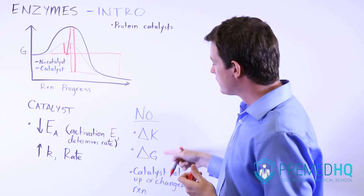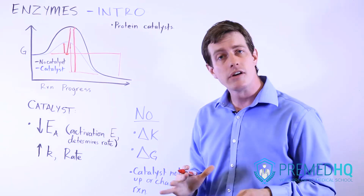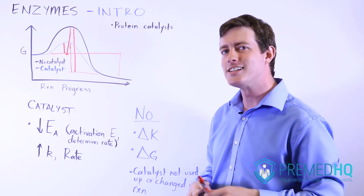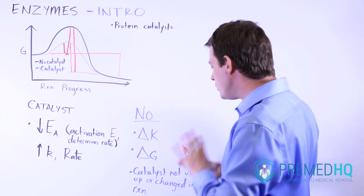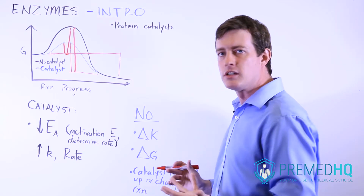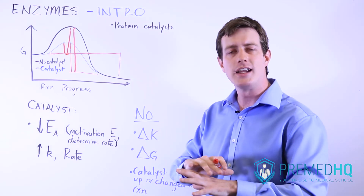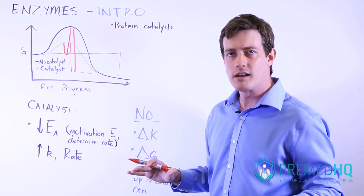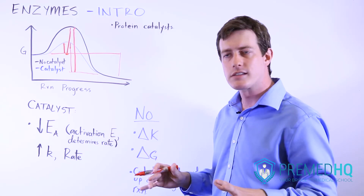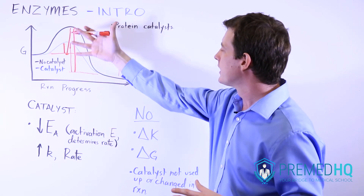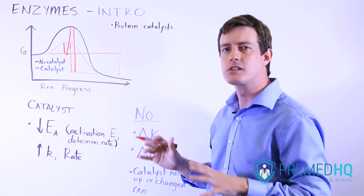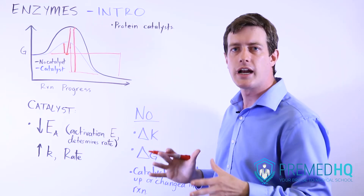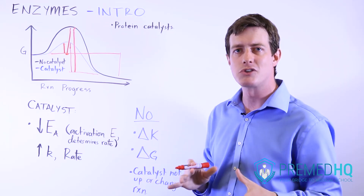One of the definitions of a catalyst is that it is not used up or changed in the reaction. It may be temporarily modified as the reaction moves forward, but you don't use up a catalyst — you never run out of it. That means it can continue to catalyze the reaction as long as you have your substrate.